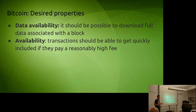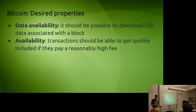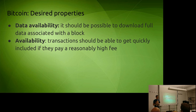Here are some more subtle properties. One is data availability: the chain does not just need to be valid, it also needs to be available. Everyone needs to be able to download the blockchain if or when they want to. If you see a block header that's part of the canonical chain, you should be able to go down the Merkle tree and download the rest of that block. You could imagine a malicious mining cartel that publishes block headers pointing to valid blocks, but hides the data — they don't distribute the actual block data, just the headers. Even though the blockchain is valid, this is still bad and something we want to avoid.